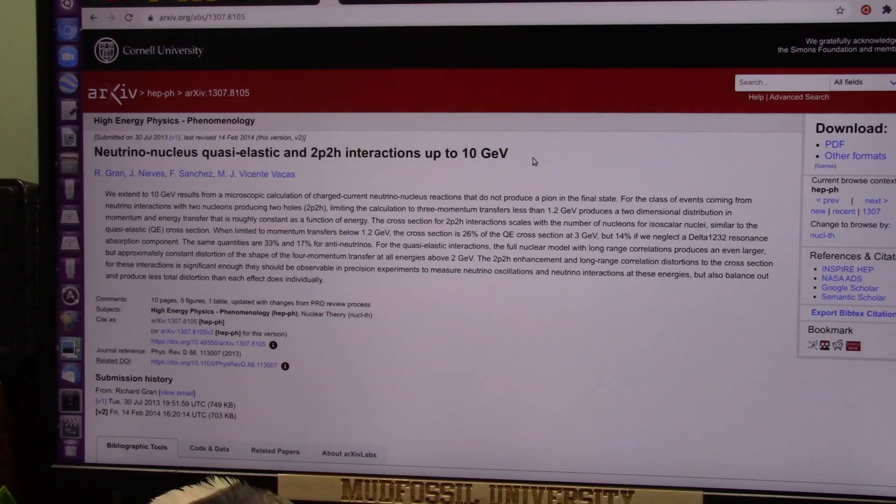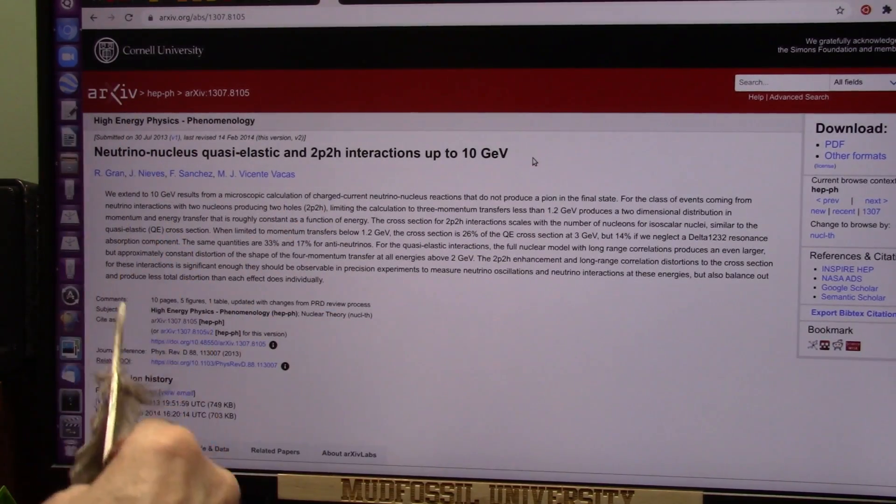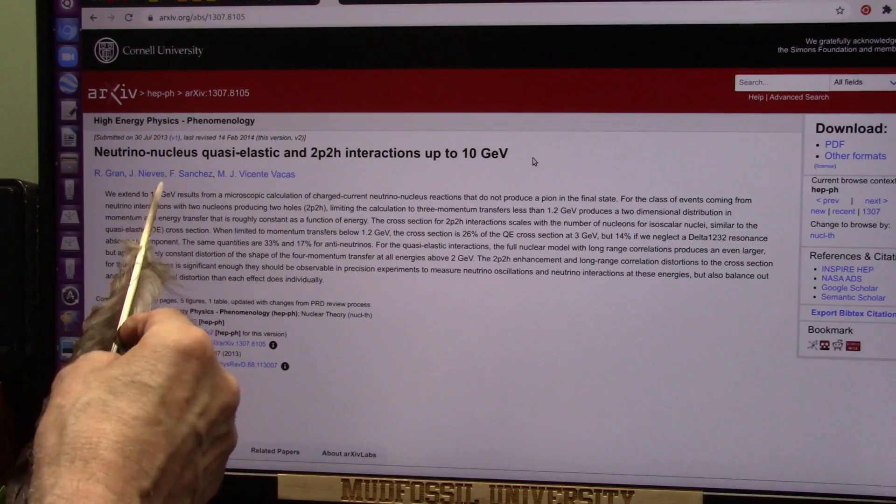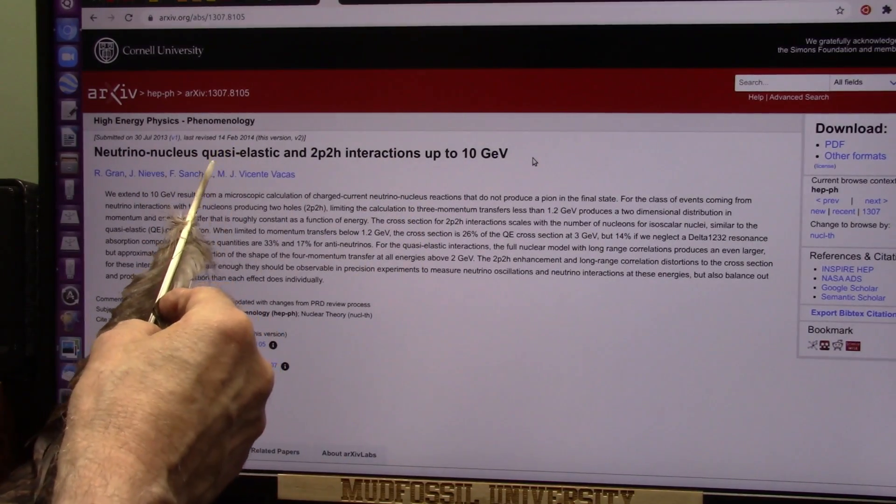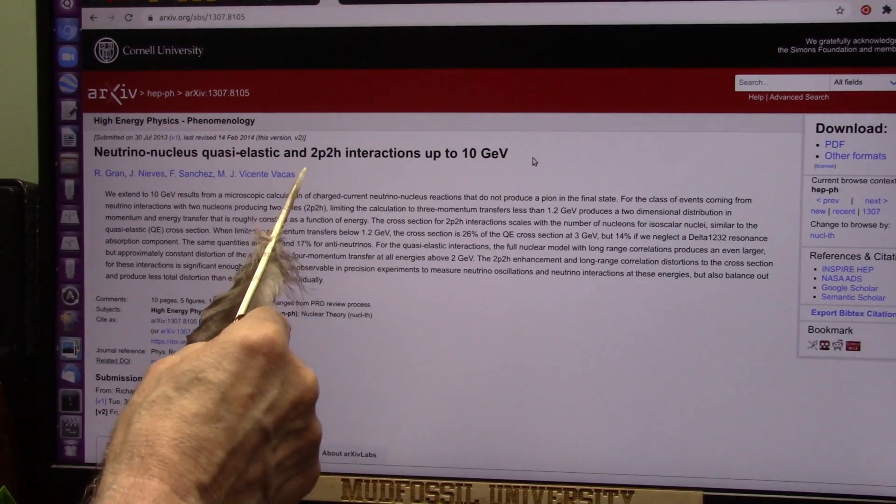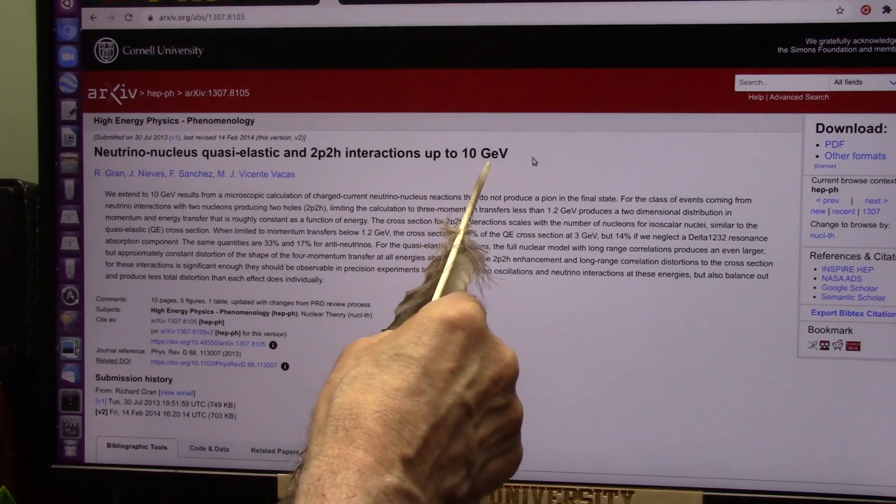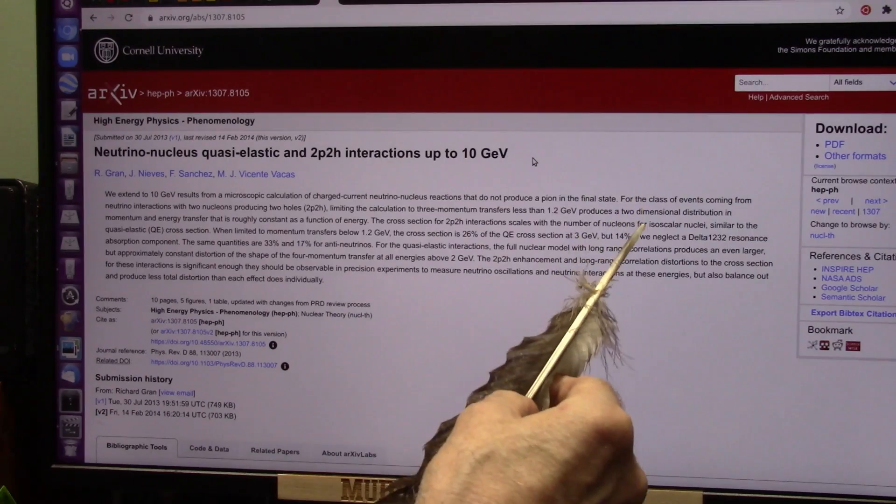Okay, this goes back to 2013 again. This is Cornell, and they had the neutrino nucleus. Neutrinos is what we're talking about. Nucleus is the core. Quasi-elastic four particles together, which is the 2P2H. And gigavolt, 10 gigavolt, giga electron volts.